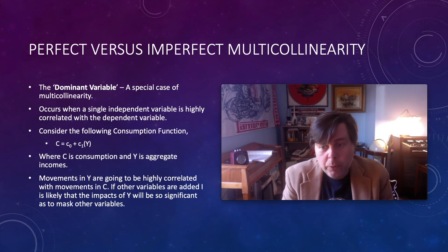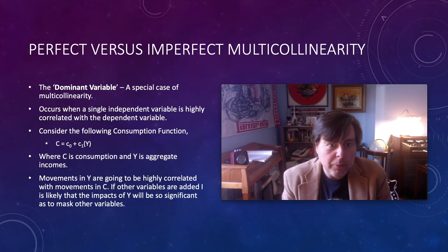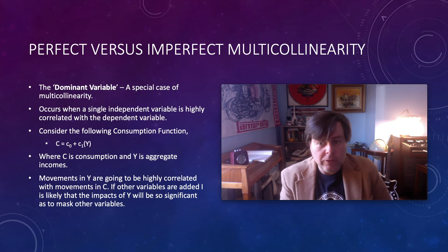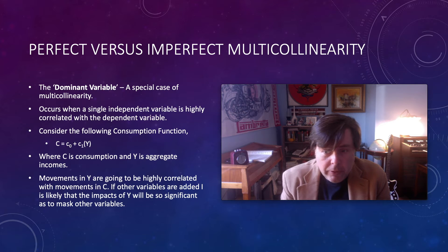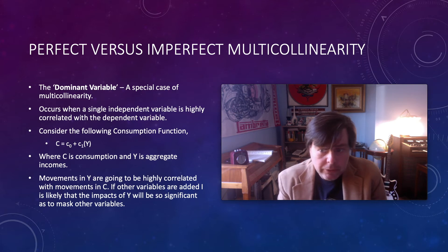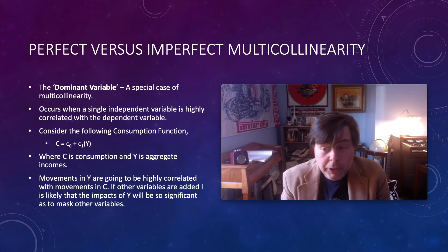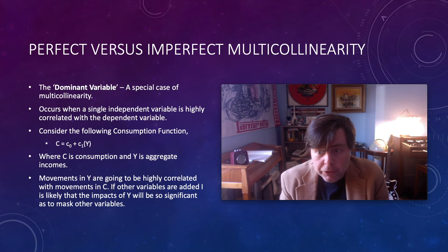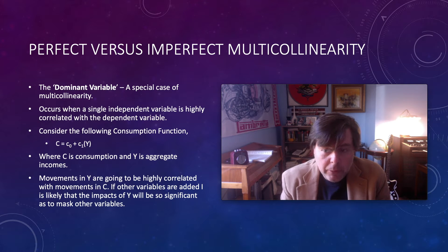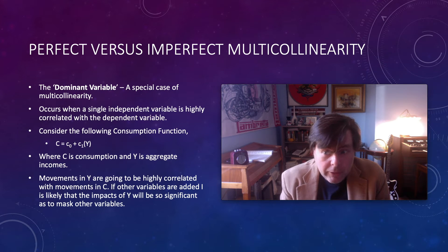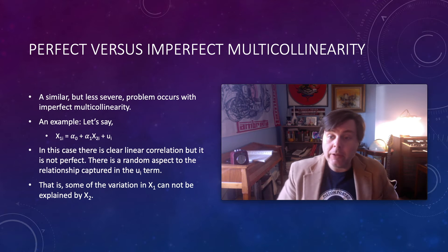Before we move on, let's talk briefly about dominant variables. Dominant variables occur when one independent variable is highly correlated with our dependent variable. For example, in a consumption function like EC104, the dominant determinant of people's current consumption is their current income. If we introduce additional variables, it's highly likely that the income variable will dominate all other explanatory variables and impact our estimated regression results.